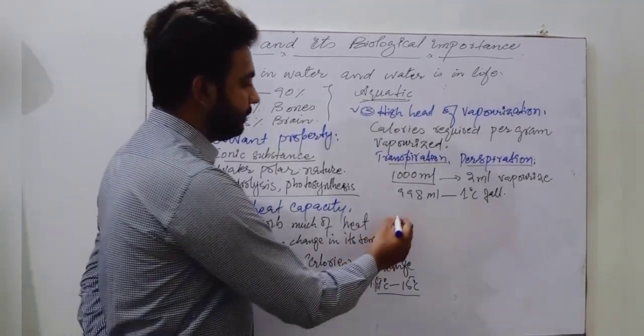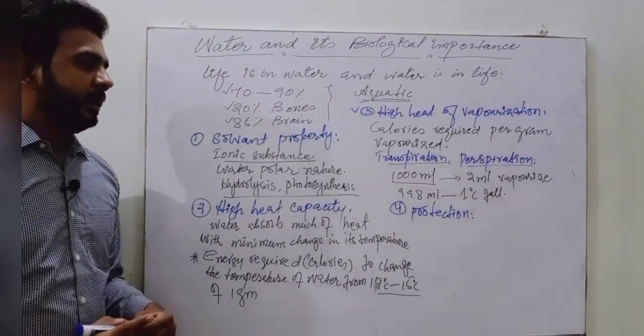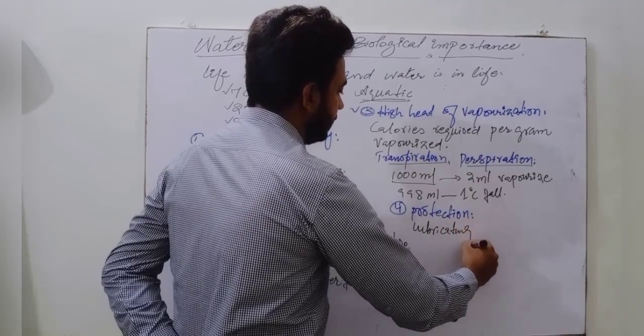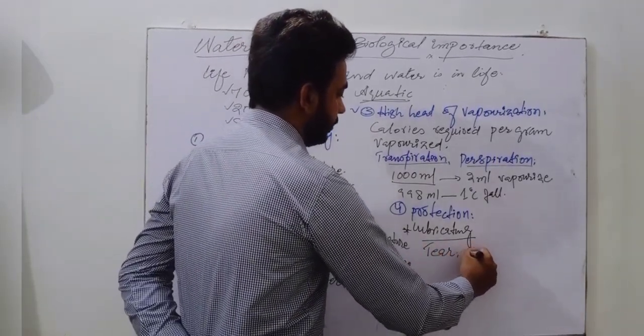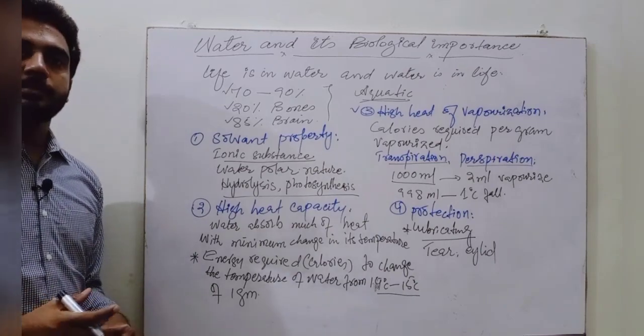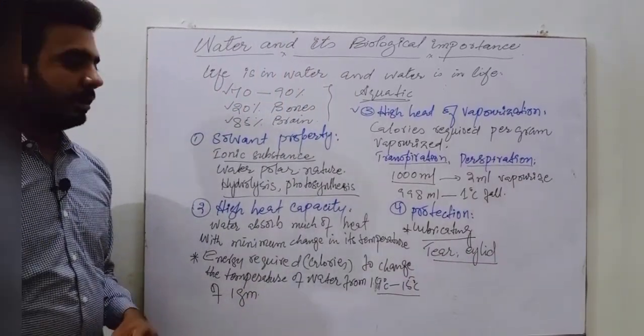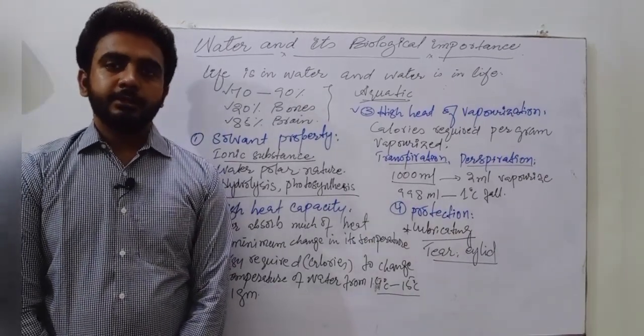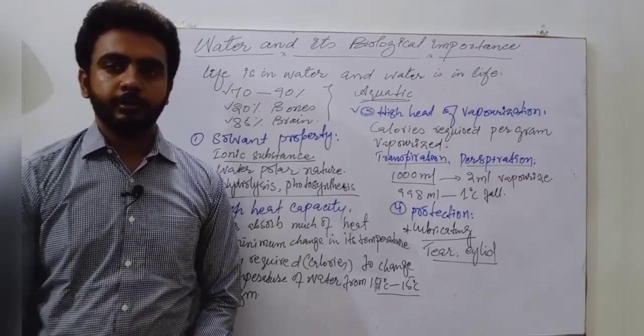The fourth property of water is protection. Water is also protective in nature. It is one of the best lubricant within the organisms. Because of lubricating property, it reduces friction in organisms. For example, tears reduce eyelid friction, and water present on organ surfaces reduces friction during their working in living organisms. This is why water is so biologically important. Hope you understand. Inshallah meet you in next lecture with another topic of this chapter which is bio molecule. Thank you so much.